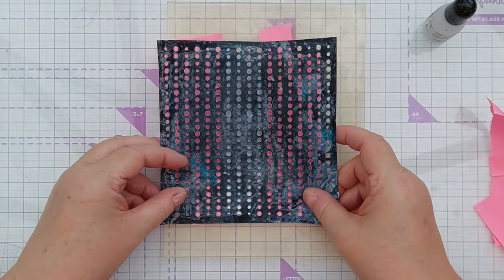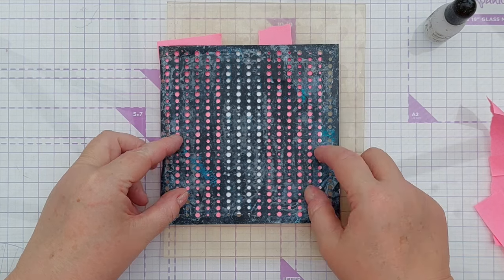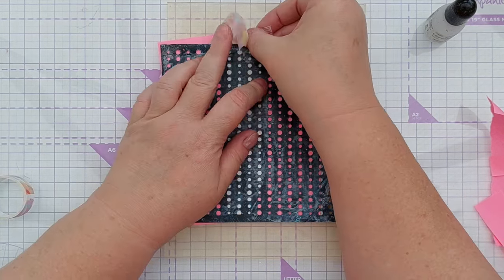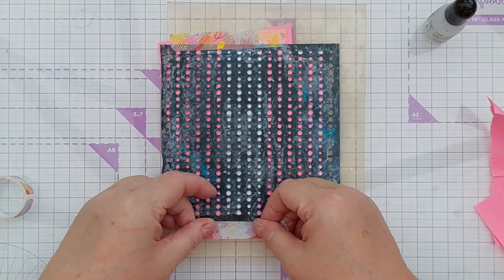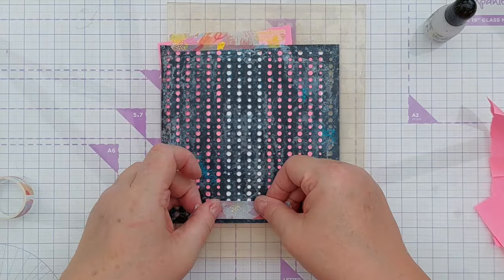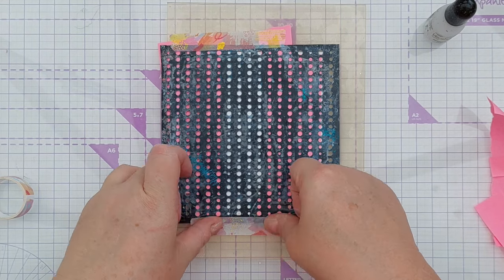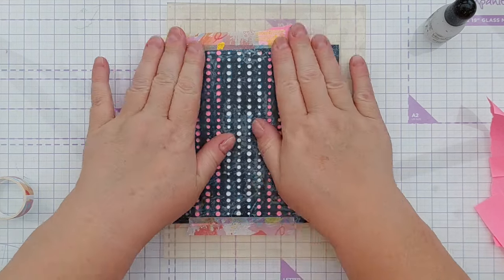Then I'm going to take my stencil, place that over the top and hold that down with a bit of washi to stop it shifting. I've got my grip mat here but with all of what's going on there's not a lot of stencil in contact with the grip mat so I'll just hold it with washi.